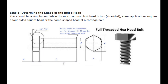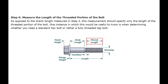Step 5: Determine the shape of the bolt's head. This should be a simple one. While the most common bolt head is hex — six-sided — some applications require a four-sided square head or the dome-shaped head of a carriage bolt. Step 6: Measure the length of the threaded portion of the bolt. As opposed to the shank length measured in step 3, this measurement should specify only the length of the threaded portion of the bolt. One instance in which this would be useful is when determining whether you need a standard hex bolt or rather a fully threaded tap bolt. I hope you understand this video.